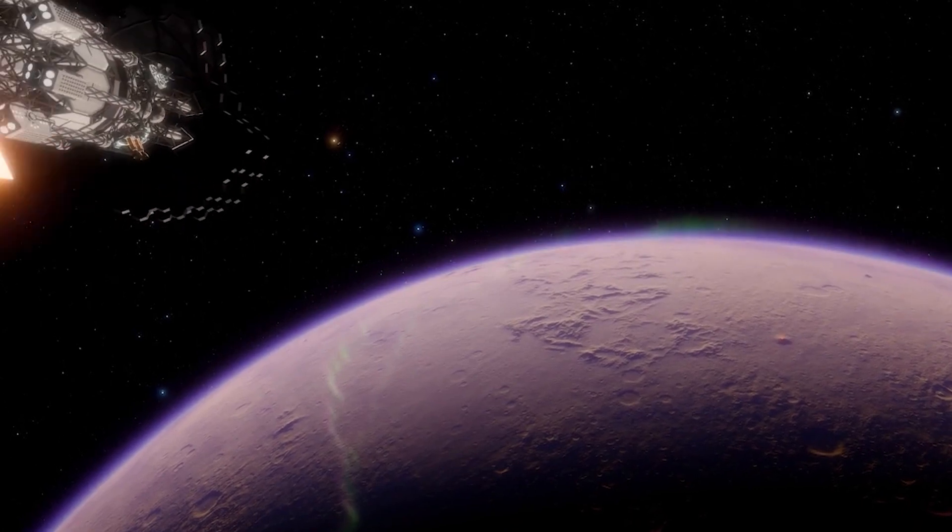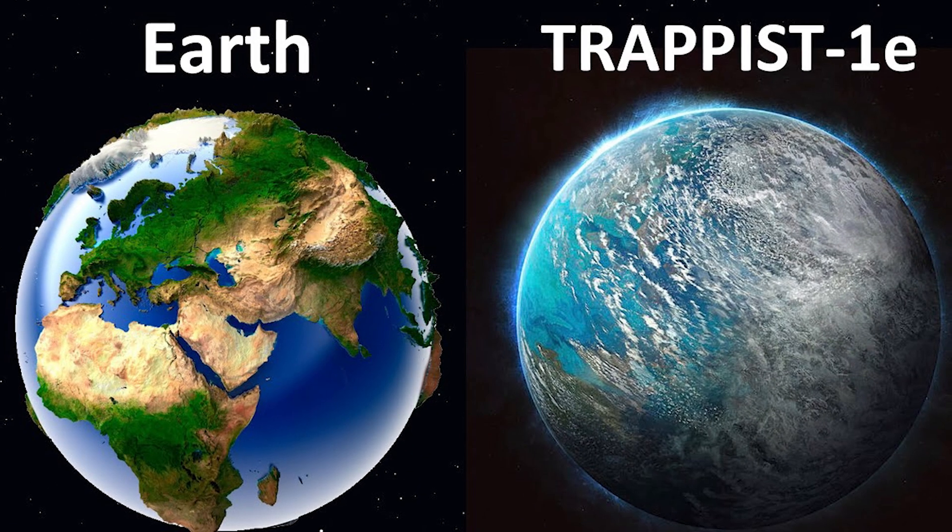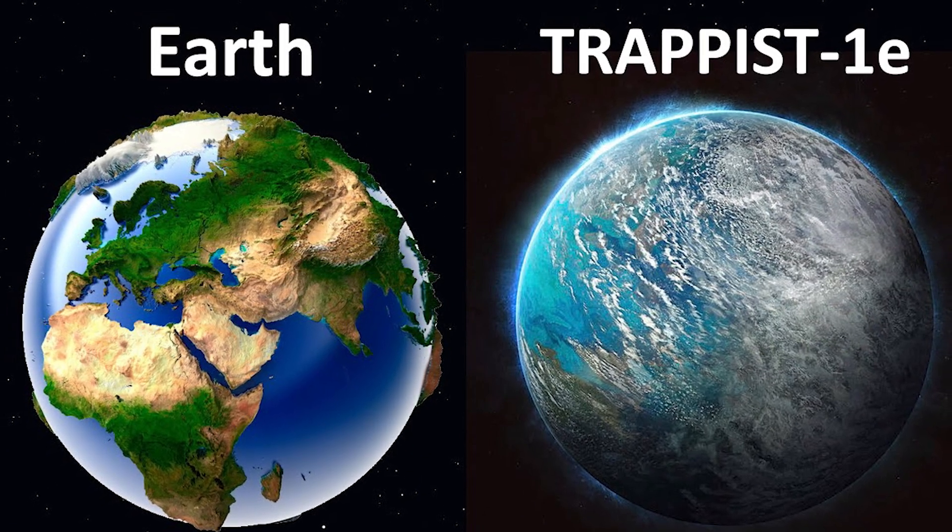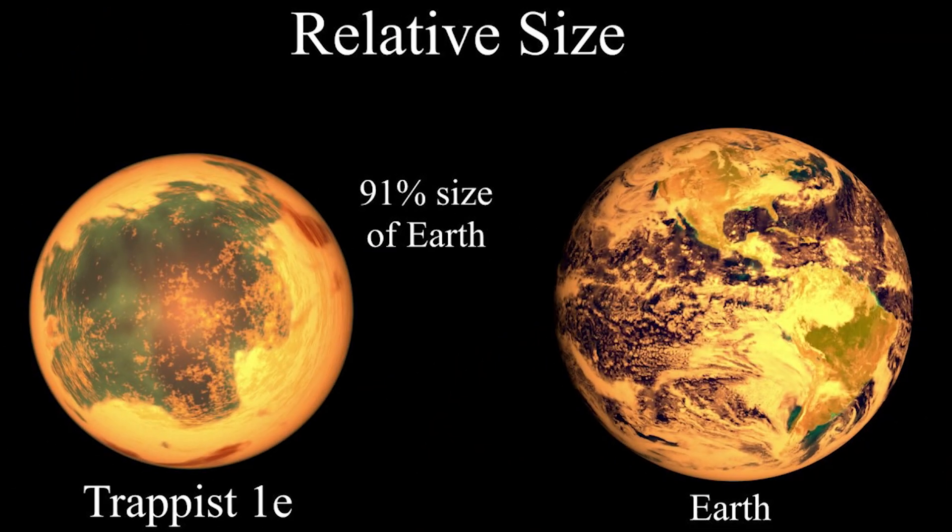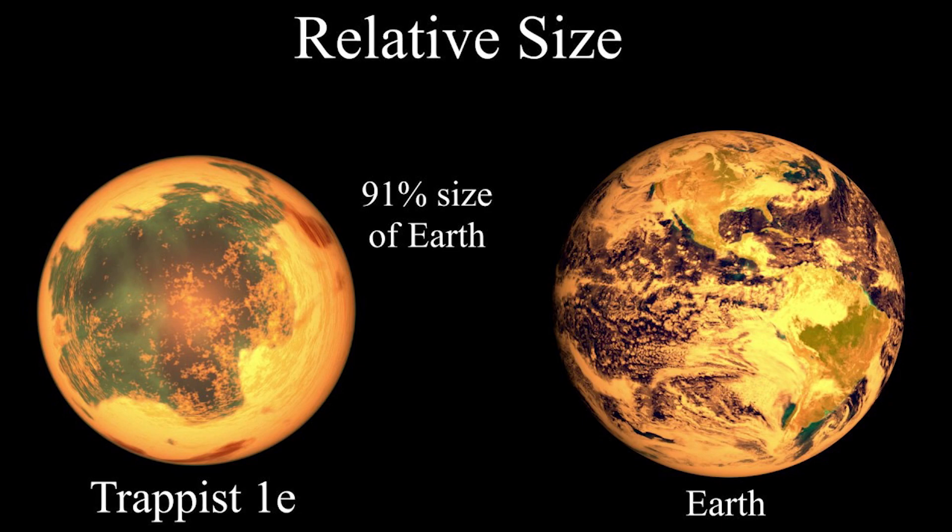However, we do not yet have photos of the planet itself. Based on the hypothetical image developed by NASA, based on the spectrum and data they collected, the planet seems similar to Earth when viewed from above, with water, gases, haze, and clouds.